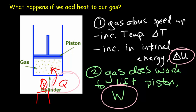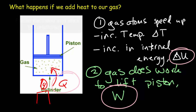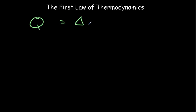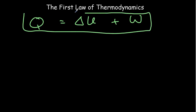We have the law of conservation of energy. Thinking in terms of that law, if you're adding heat energy to a system and there are only two things that system can do — only two forms of energy that can be created — then the sum of those two forms has to equal Q. In other words, the heat added must equal the change in internal energy plus the work. This statement is called the first law of thermodynamics.